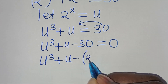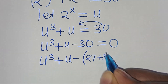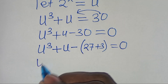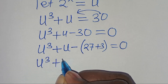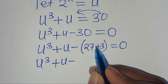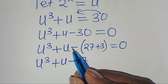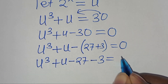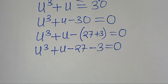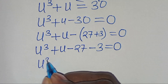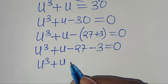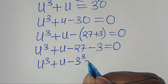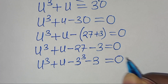We can express 30 as 27 plus 3. So here we have u to the power of 3 plus u minus 27, minus 3, and this is equal to 0. We can express 27 as 3 to the power of 3, so we have u to the power of 3 plus u minus 3 to the power of 3, then minus 3. This is equal to 0.